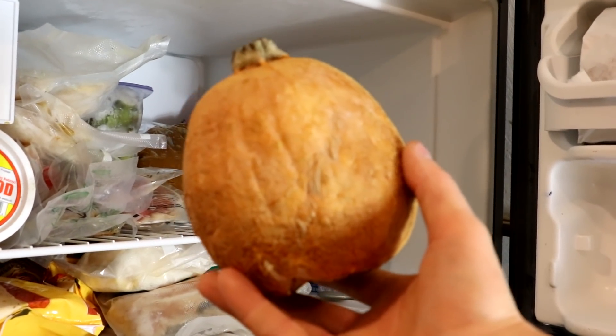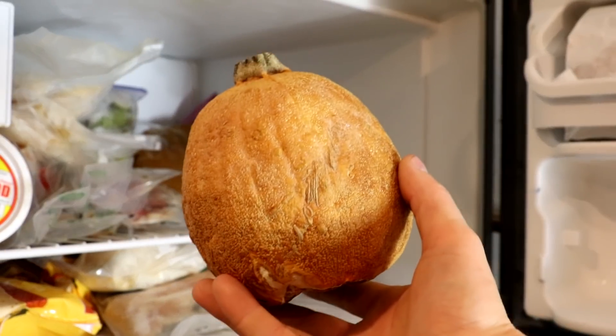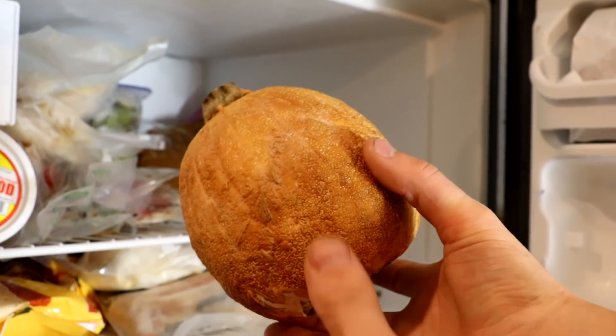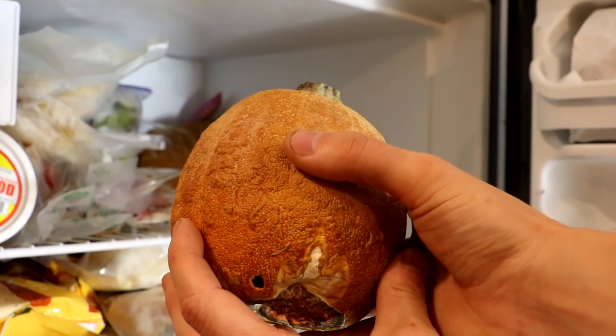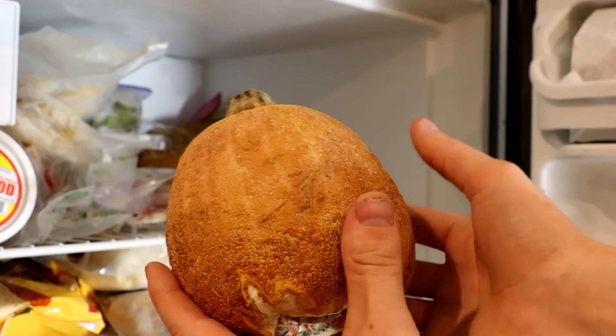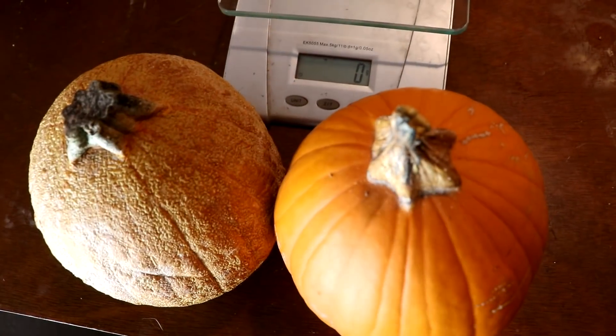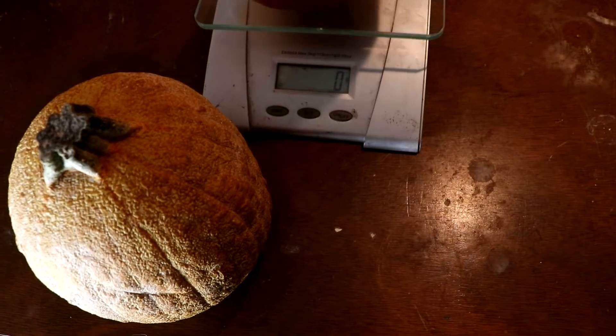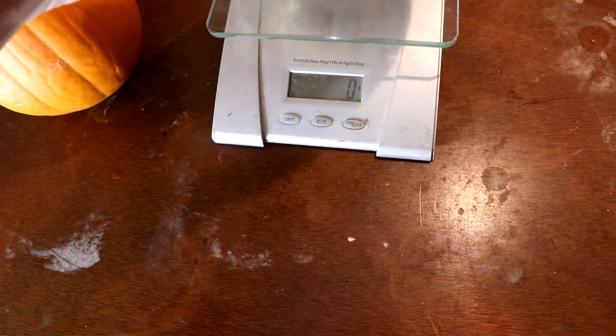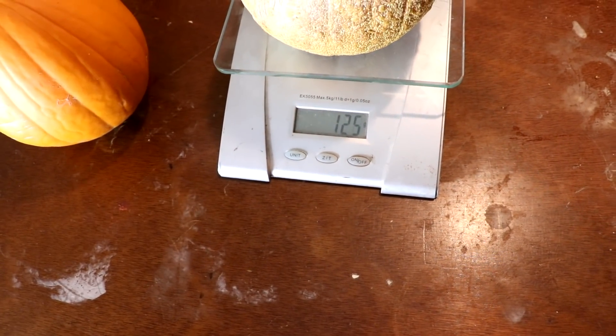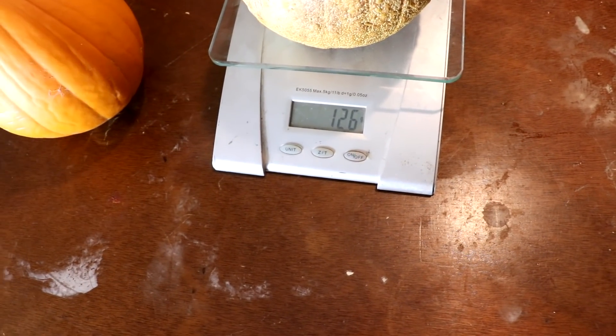You can tell it is extremely freezer-burned. It is soft and squishy, almost like it's made out of foam. It's very light. If we compare it to a similarly sized fresh pumpkin, it is nearly a fifth of the weight.